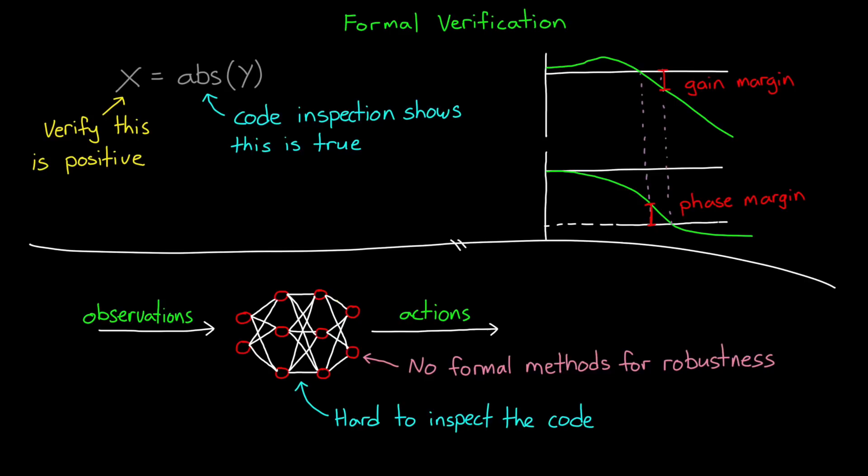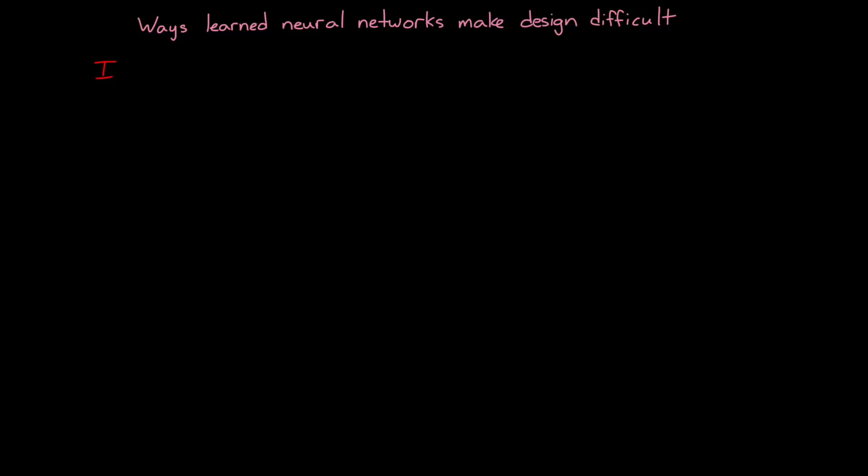Okay, so these are some of the ways that using learned neural networks make design difficult. It's hard to verify their performance over a range of specifications. And then if the system does fail, it's hard to pinpoint the source of the failure. And then even if you can pinpoint the source, it's hard to manually adjust the parameters or the structure, leaving you with the only option of redesigning and starting the training process over again.